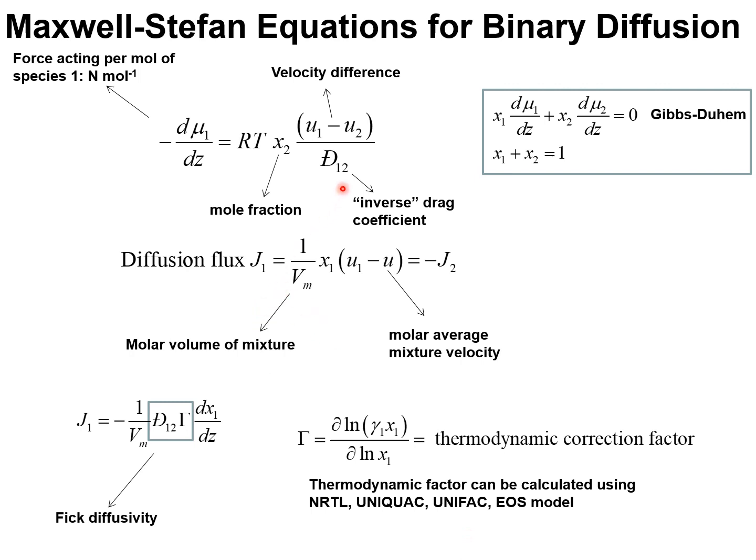And the Maxwell-Stefan equations can be recast into the form: flux of component 1 is proportional to the mole fraction gradient of component 1. And the constant of proportionality is the Maxwell-Stefan diffusivity times gamma.